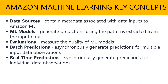Batch predictions are for a set of observations that can run all at once. This is ideal for predictive analysis that does not have a real-time requirement. We also have real-time predictions, which are for applications with low-latency requirements — for instance, an interactive web, mobile, or desktop application. Any machine learning model can be queried for predictions using the low-latency real-time prediction API.